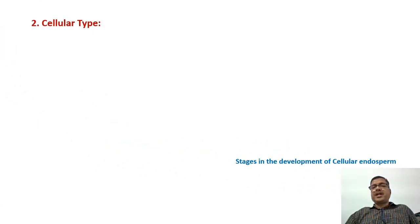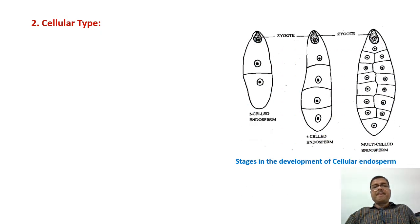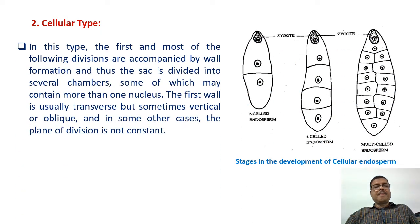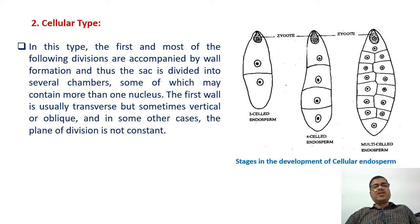Cellular type: all divisions are accompanied by wall formation, and thus the sac is divided into several chambers, some of which may contain more than one nucleus. The first wall is usually transverse but sometimes vertical or oblique, and in some other cases the plane of division is not constant.